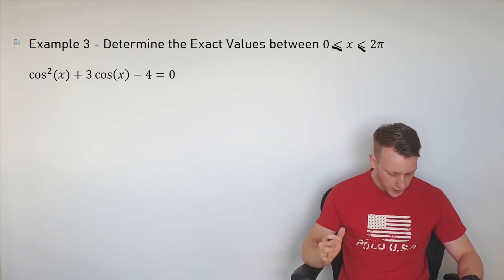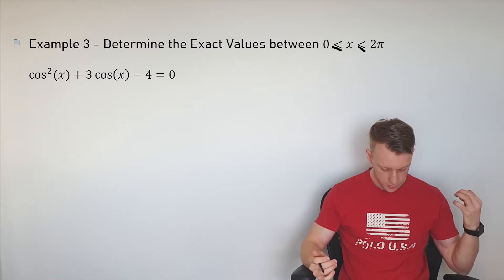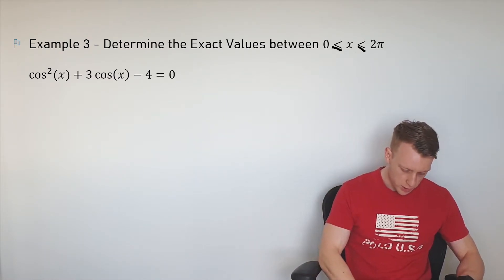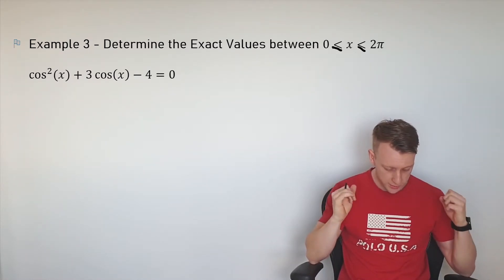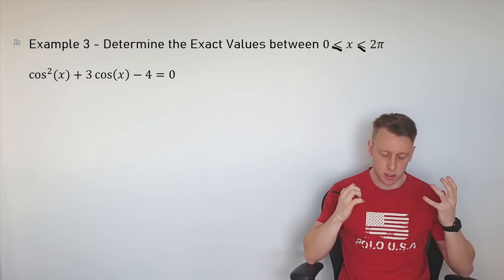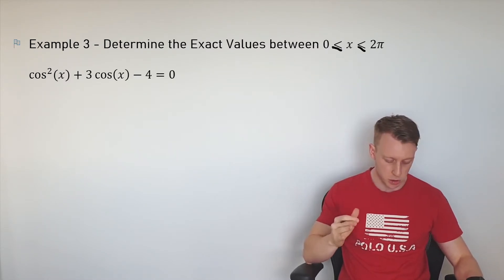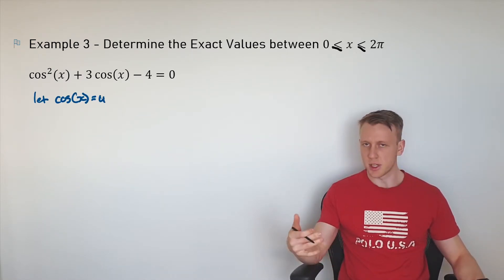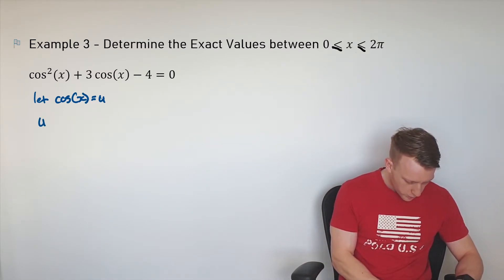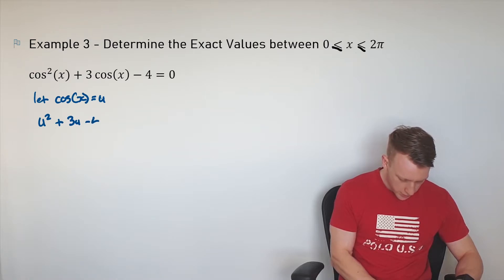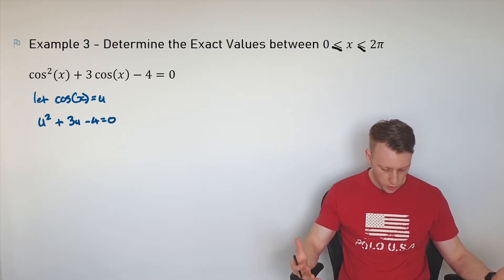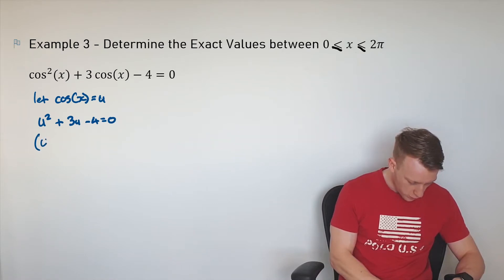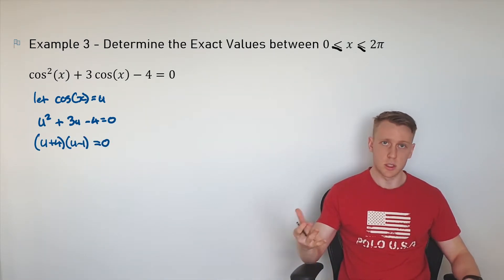The third example: determine the exact values between 0 and 2π for cos squared of x plus 3 cos of x minus 4 equals 0. I look at this and I see a quadratic straight away. So I'm going to turn it into a quadratic I can solve using substitution. Let cos of x equal u. When we do this transformation, we get u squared plus 3u minus 4 equals 0 — a quadratic we can definitely solve. It's factorisable, and we can get solutions for u quite easily.